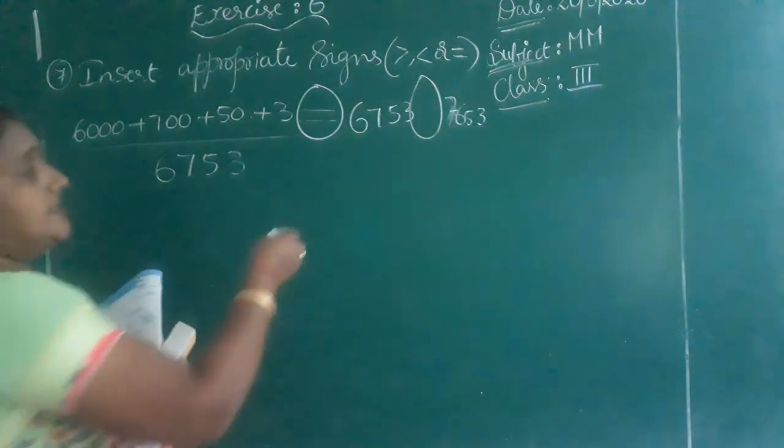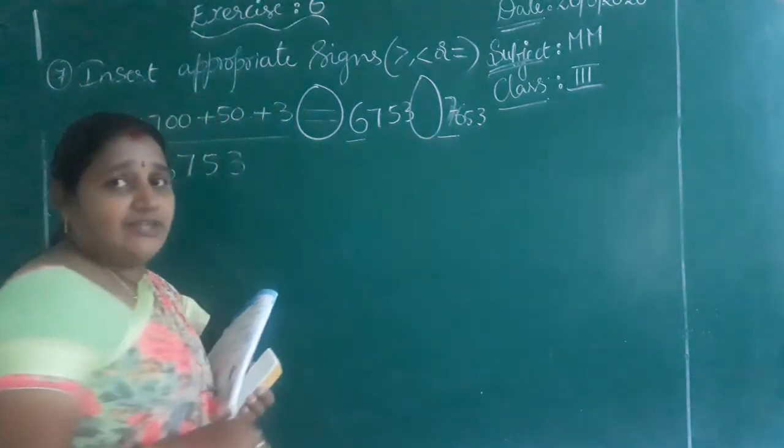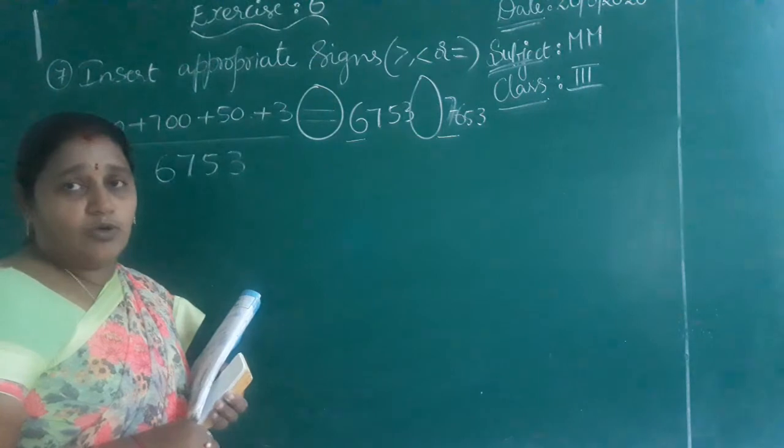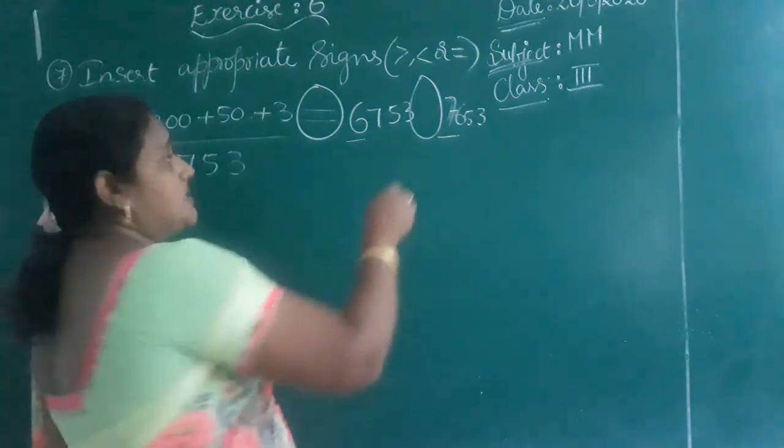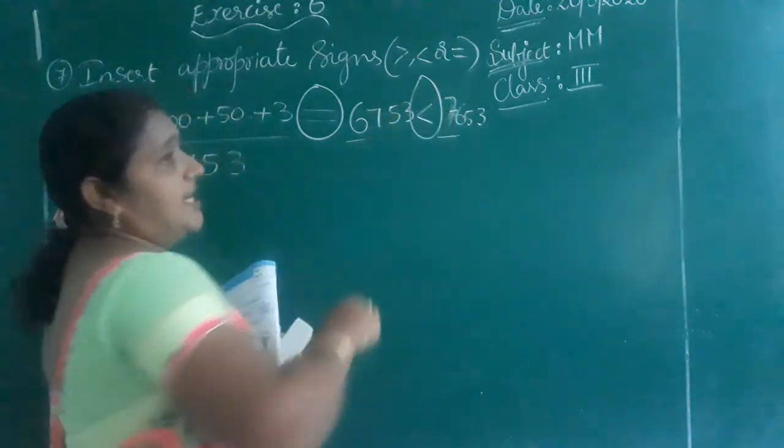Next: the number is 6,000 and we get 7,000. So 7,000 is the bigger number. Therefore 7,000 is greater than 6,000, and you place the greater than sign.